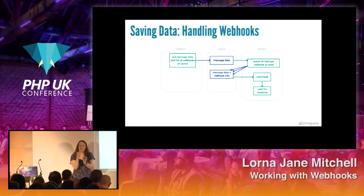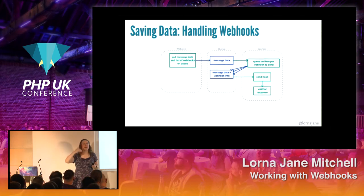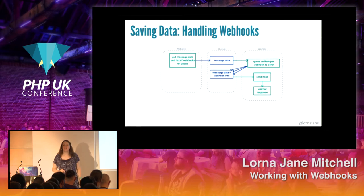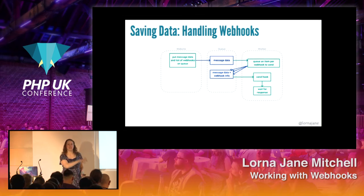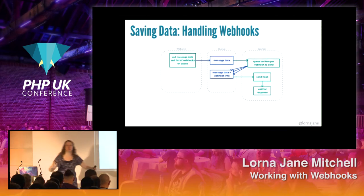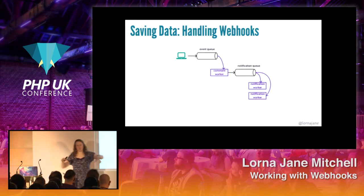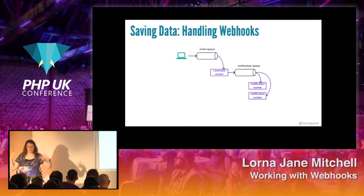Webhooks, because you're holding the connection open, can be a real difficult performance issue. If you've worked with the Slack integrations, if you don't respond within three seconds, they close the connection — because otherwise they run out of web server, holding connections open waiting for you. This is why I do it this way: to keep each piece independent and allow you to scale up. The website puts things in the queue. The first worker puts more things — one per endpoint — into the notification queue. We have a bunch of workers actually sending those webhooks.